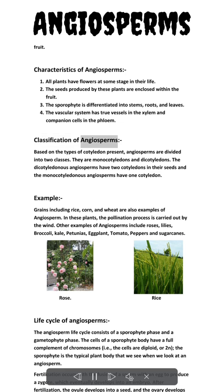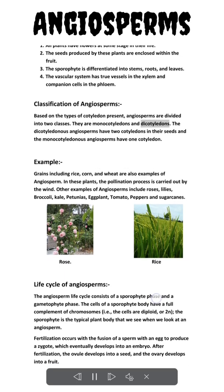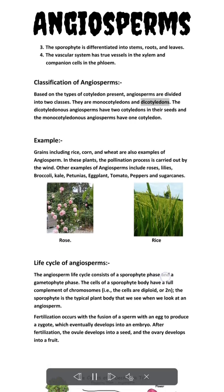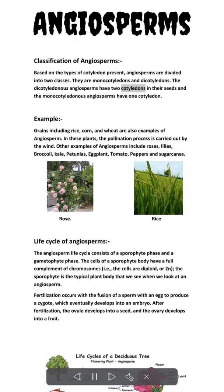Classification of angiosperms. Based on the types of cotyledon present, angiosperms are divided into two classes: monocotyledons and dicotyledons. The dicotyledonous angiosperms have two cotyledons in their seeds, and the monocotyledonous angiosperms have one cotyledon.